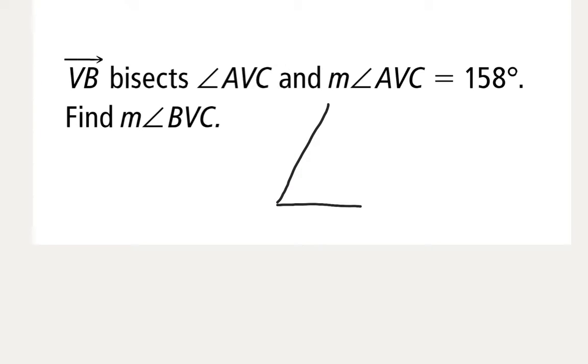So we have an angle being bisected, and that angle is AVC, so I'm going to put an A, V, and a C. And we're told that ray VB bisects this angle, so I'll put ray VB, so it must be kind of like this. There's a B out here.